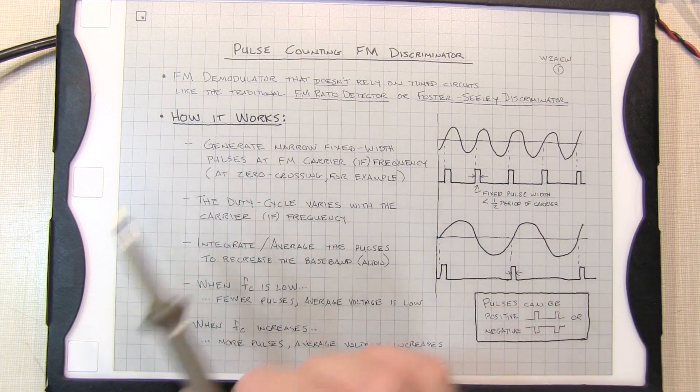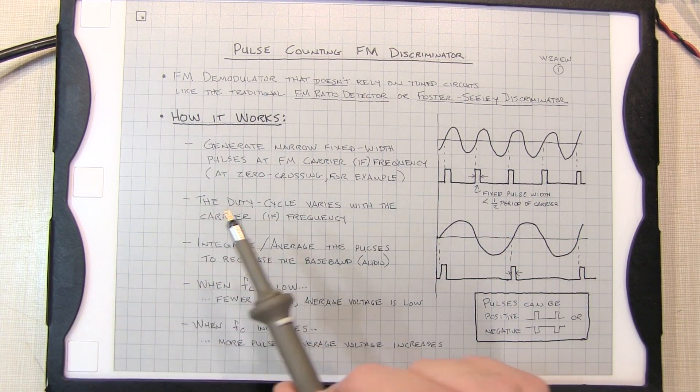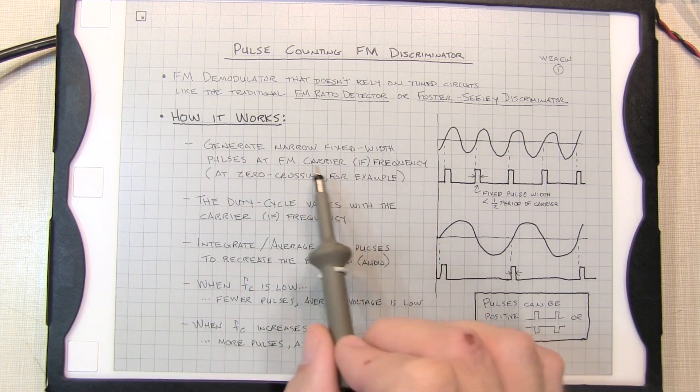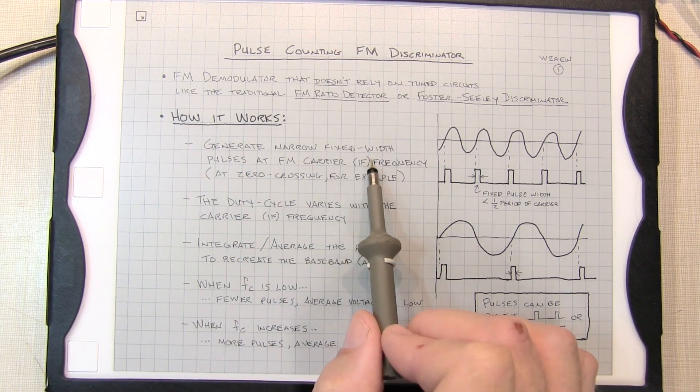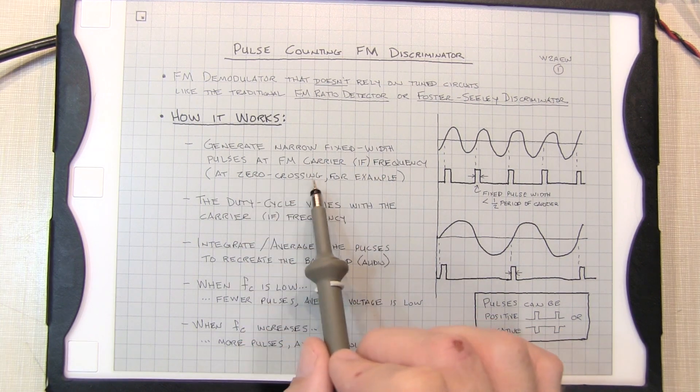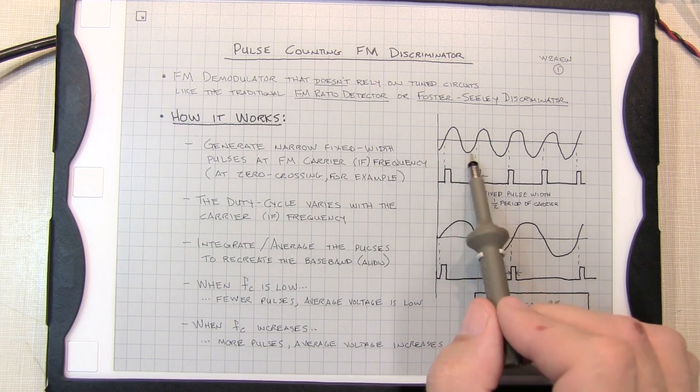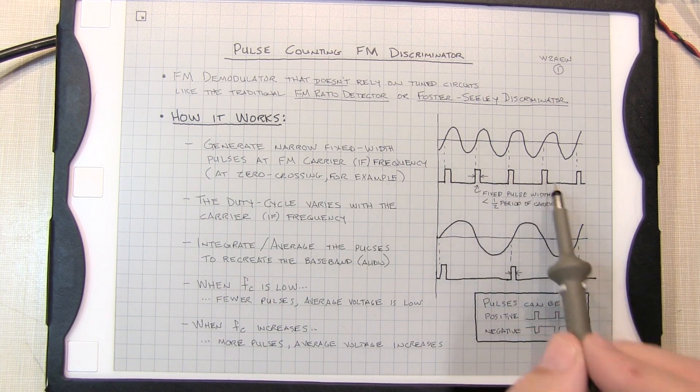So here's how the pulse counting FM discriminator works. The discriminator generates a narrow fixed width pulse at the FM carrier or the IF frequency, typically at the zero crossing. So here's an example where each time we're crossing up through zero we generate a narrow little pulse.